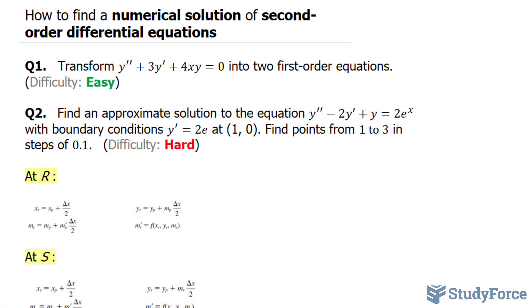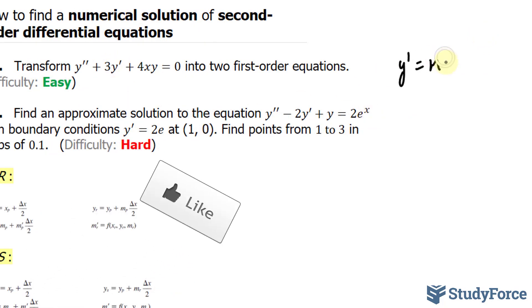What you have to do here is make the substitution that y' = m. By doing that, you can transform the second-order equation into two first-order equations. So let's set y' = m. That's our first of two first-order equations. I'll substitute this y' with m and y'' will be substituted with m'. So we have m' + 3m + 4xy = 0.